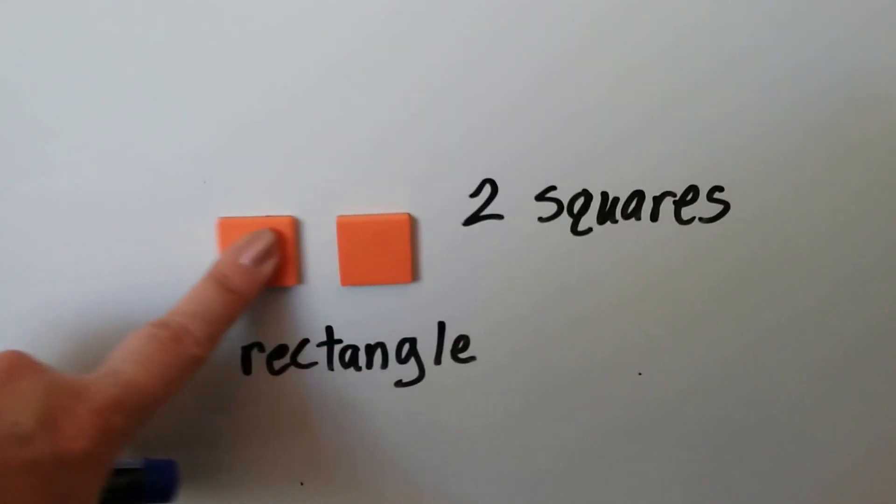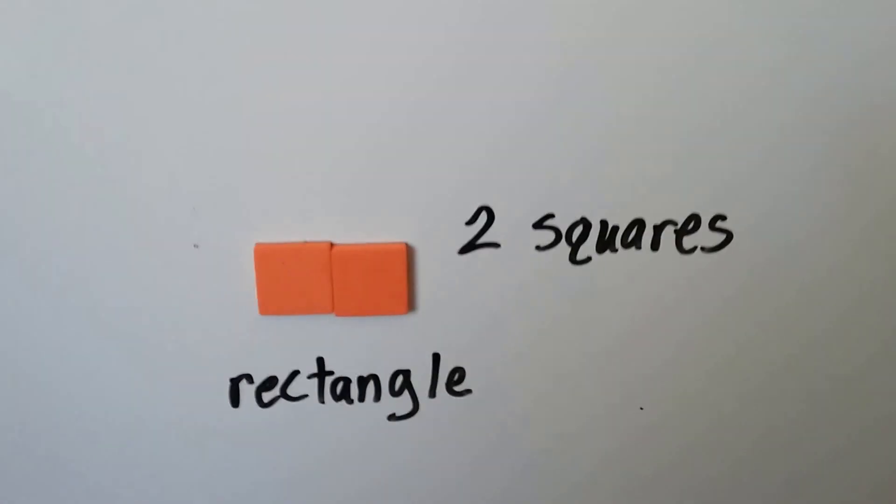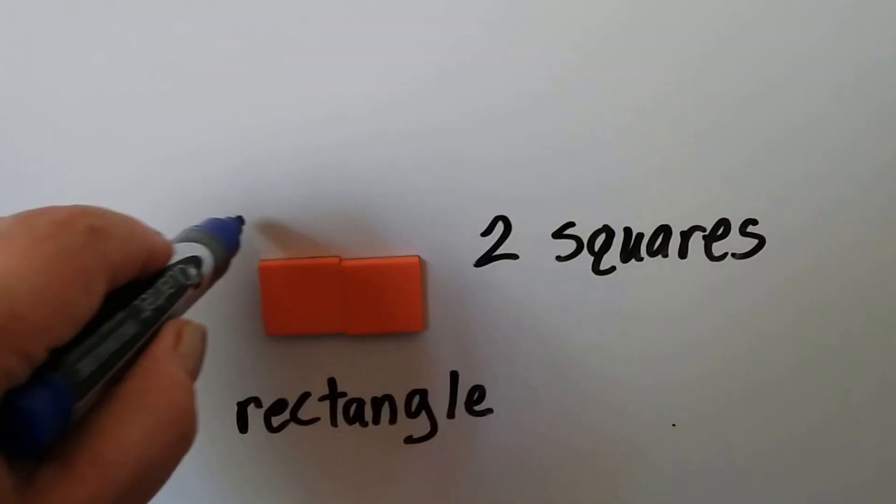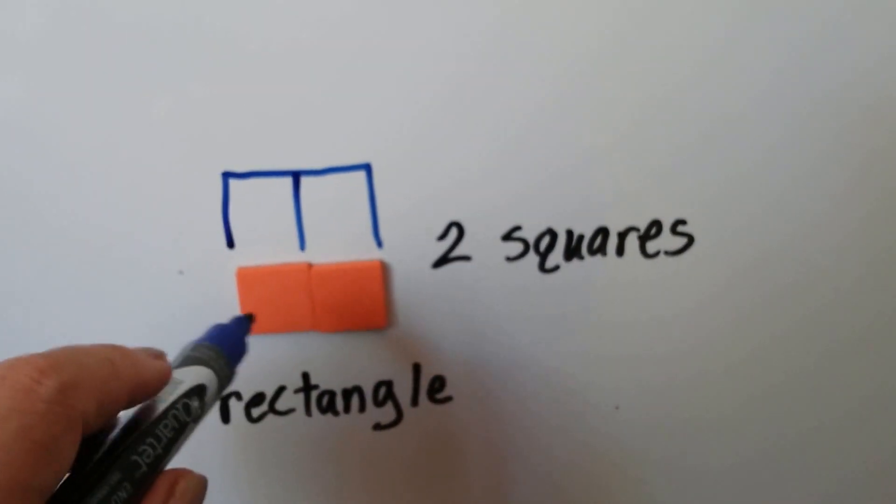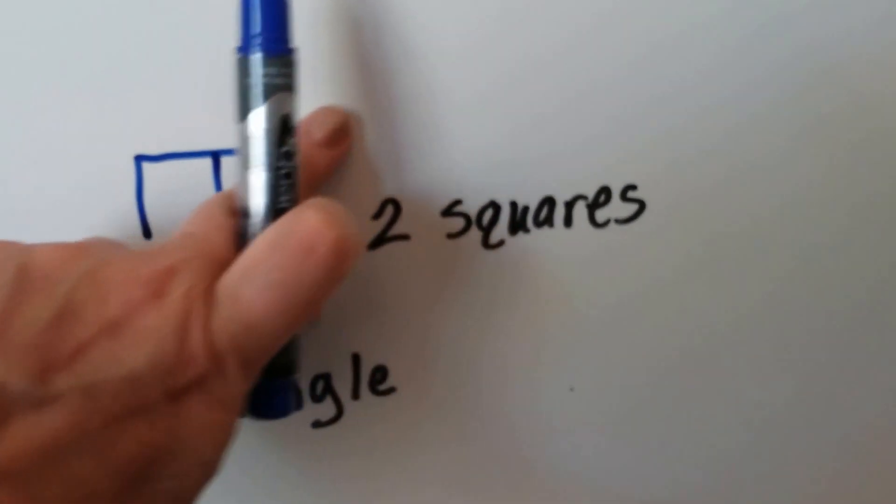I took two squares and made a rectangle. I could have added two more squares. I ran out of shapes. I could have added two more squares and made a big square.